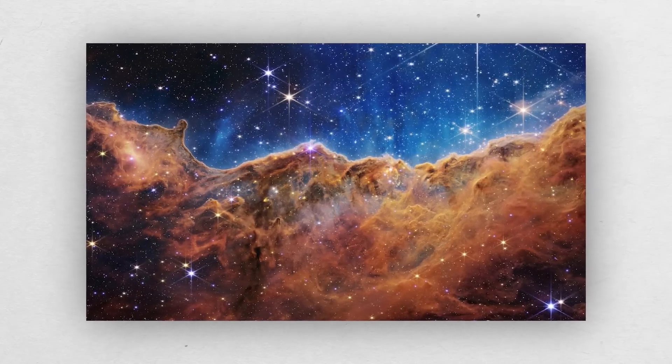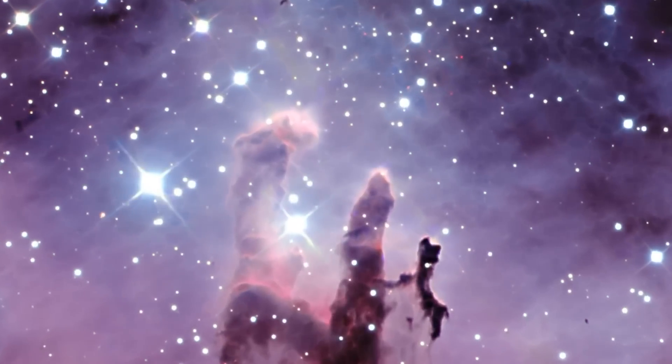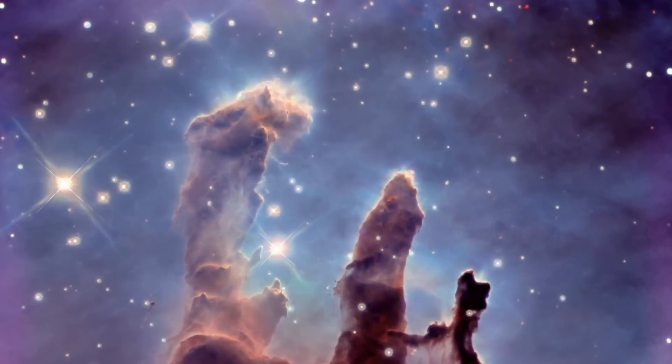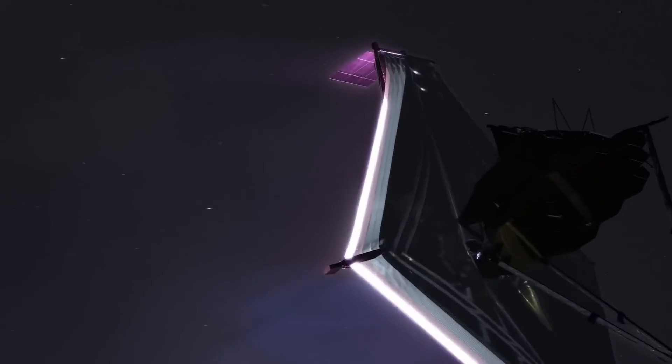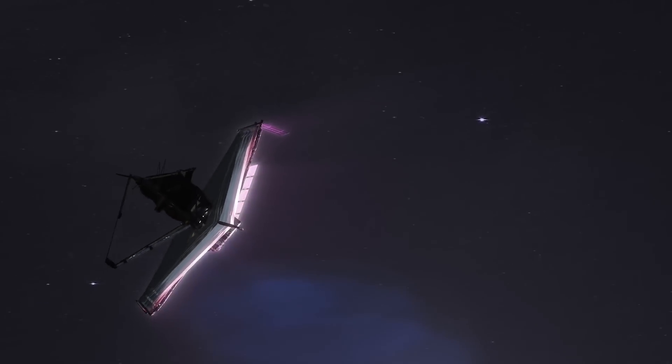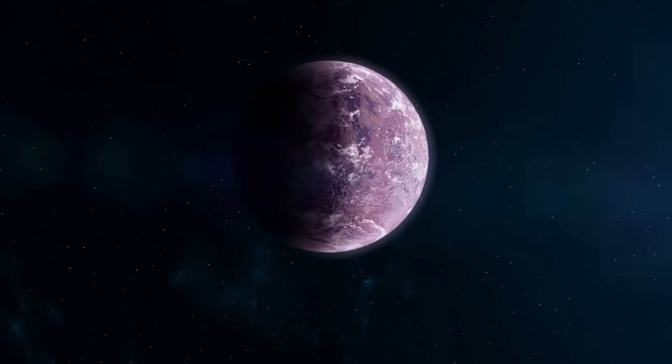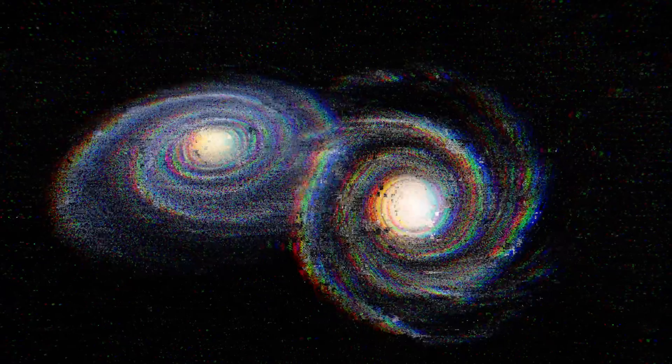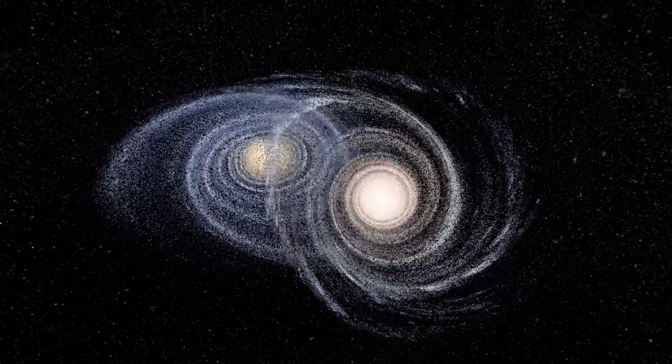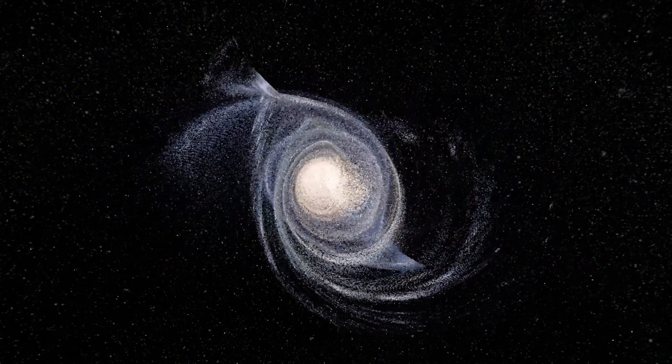The first full-color image taken by JWST, which astronomers described as the deepest view of the universe ever taken, was shared by President Joe Biden on July 11. The following day, NASA released four additional first photographs to demonstrate Webb's extraordinary capability. These images included close-ups of a faraway dying star, an extraterrestrial exoplanet, and a cluster of five galaxies that were chaotically colliding, and a dozen more up to this date.